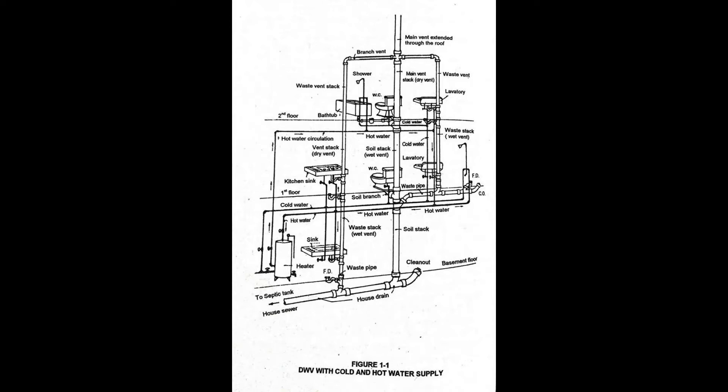Drainage system includes all piping within the public or private premises that conveys sewage, rainwater, or other liquid waste to a legal point of disposal. It does not include the means of public sewer system, private or public sewerage treatment, or disposal plant.